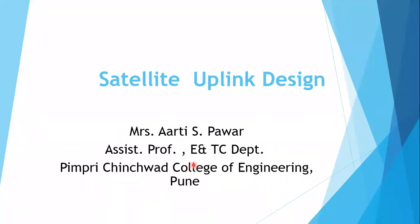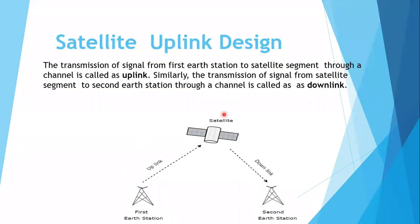Satellite uplink design. A satellite link is the transmission path between an earth station and a satellite. The satellite uplink is the link between the earth station and the satellite in the upward direction. Looking at this diagram, two earth stations and a satellite are shown. The signal is transmitted from the first earth station upward towards the satellite — that transmission path is the uplink. When the signal travels from the satellite to another station in the downward direction, that link is called the downlink.